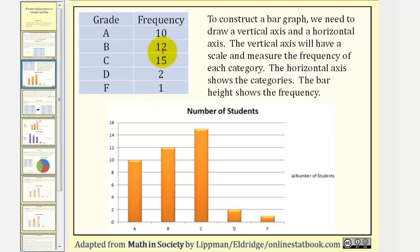For B, the frequency is 12, so for B, the bar has a height of 12, and so on. Sometimes you'll also see the frequency listed at the top of each bar, like this.